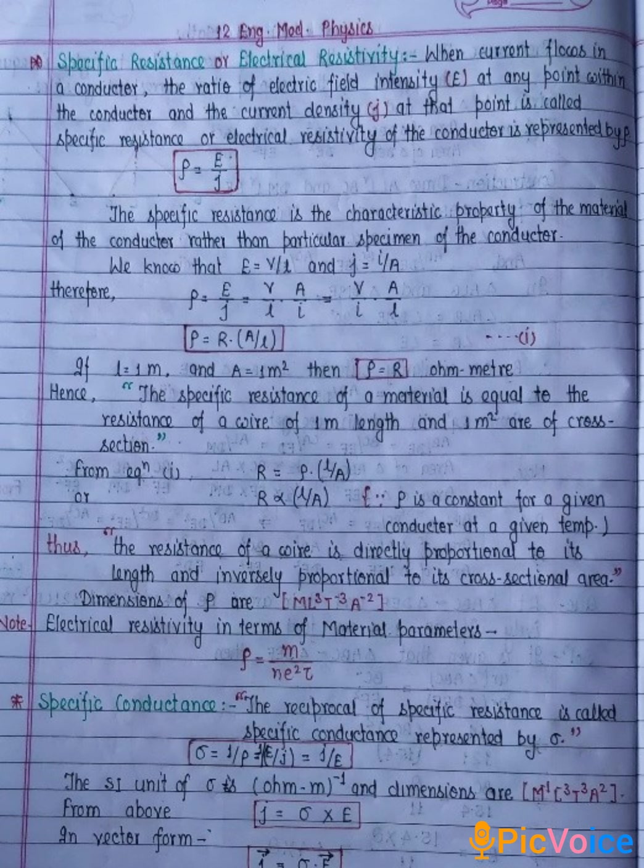When current flows in a conductor, the ratio of electric field intensity E at any point within the conductor and the current density J at that point is called specific resistance or electrical resistivity of the conductor. It is represented by rho. Rho is equal to E by J.